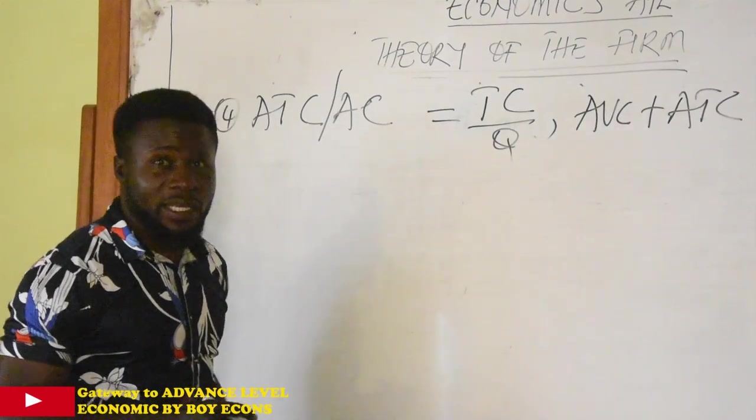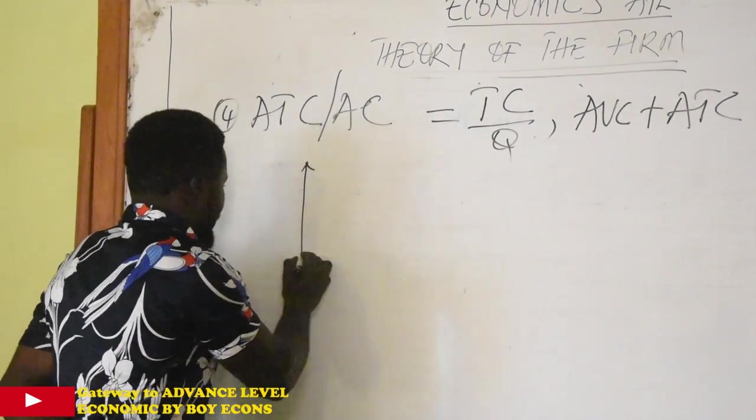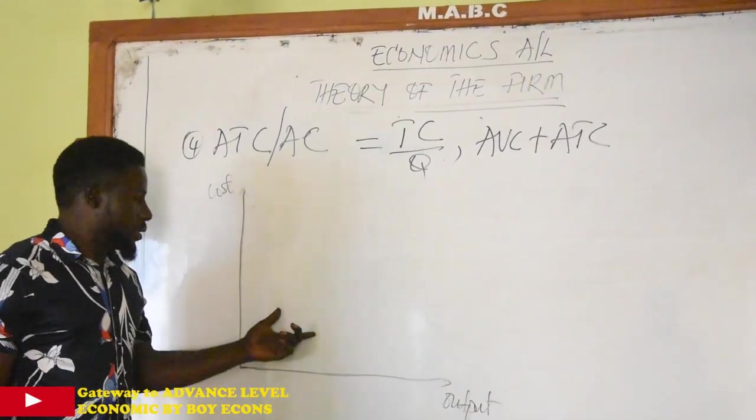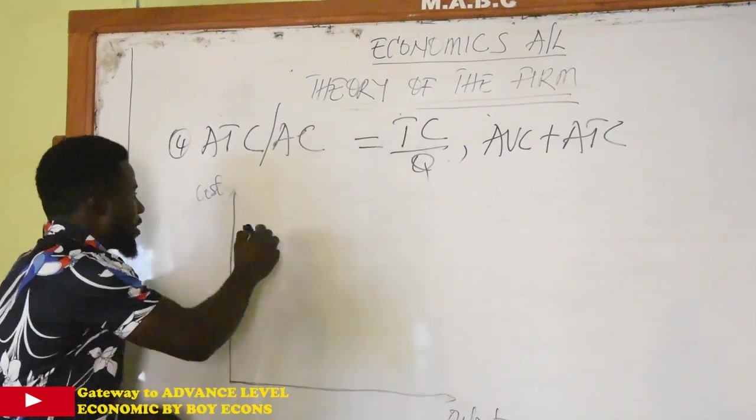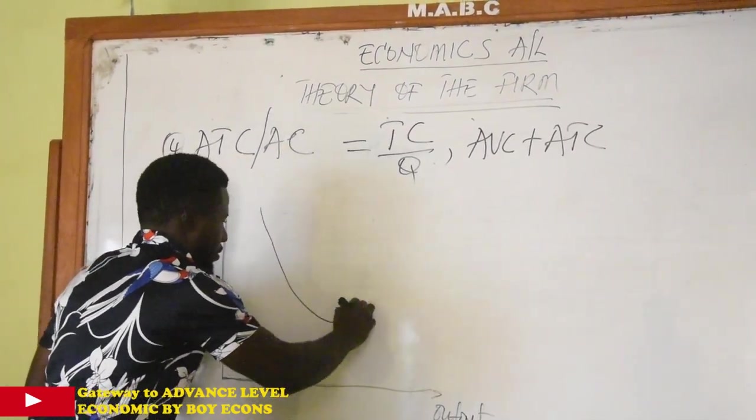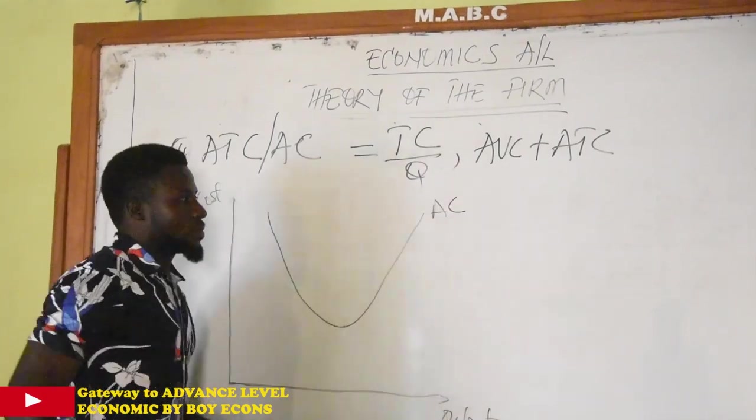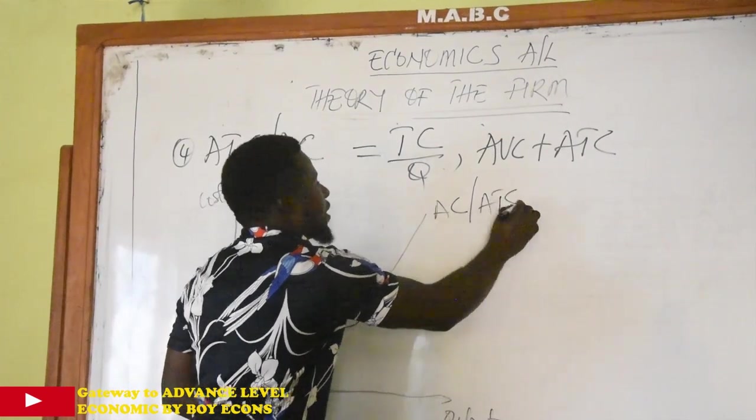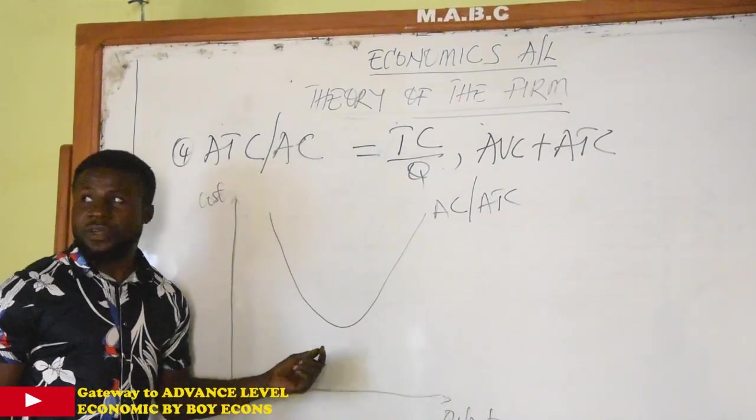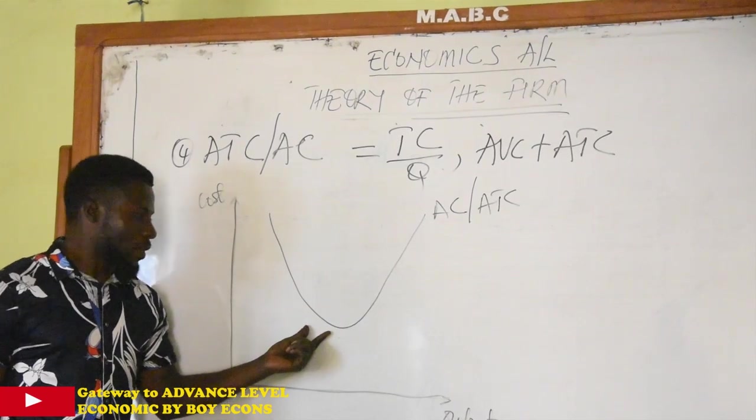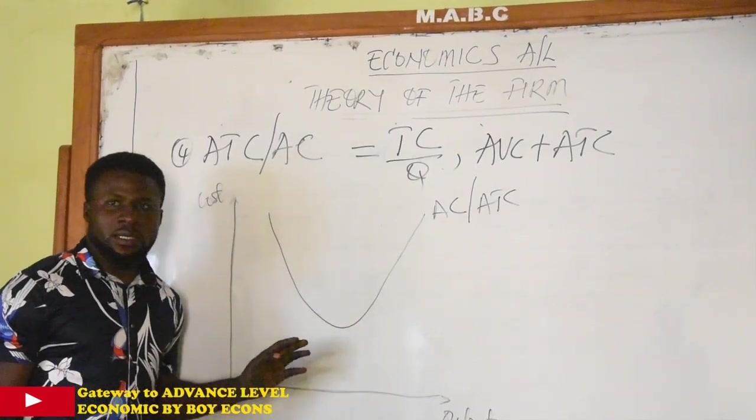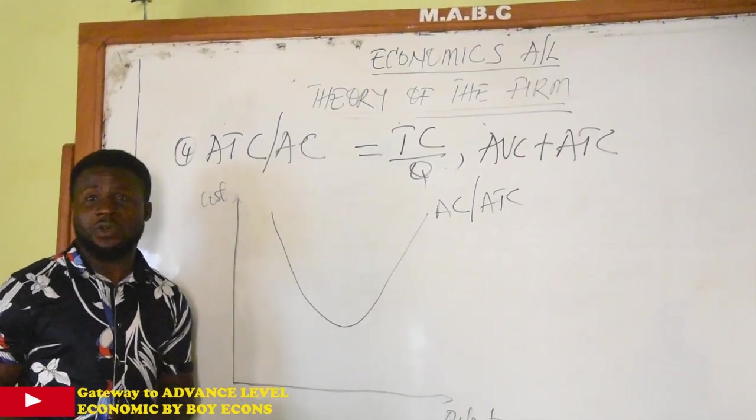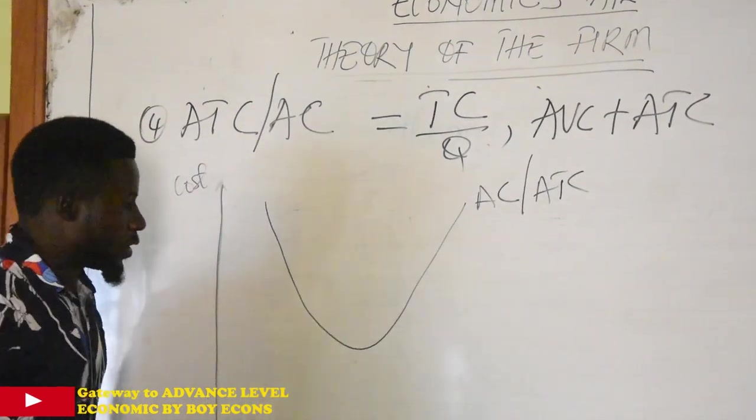So this is how it is illustrated diagrammatically. So we have a typical diagram of our average cost, or we call it the average cost curve or the average total cost curve. And as I said, this is a very significant concept of cost because it illustrates the idea of economies of scale and dis-economies of scale, as well as what we call the technical optimal output of a firm.